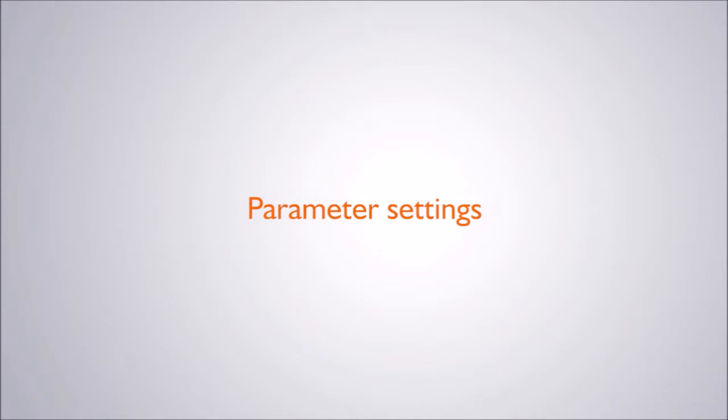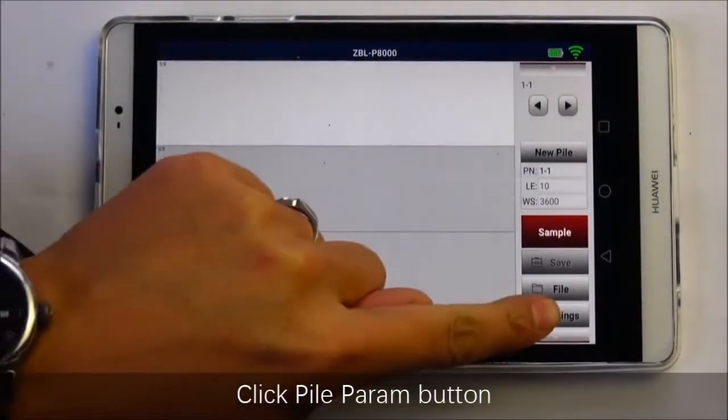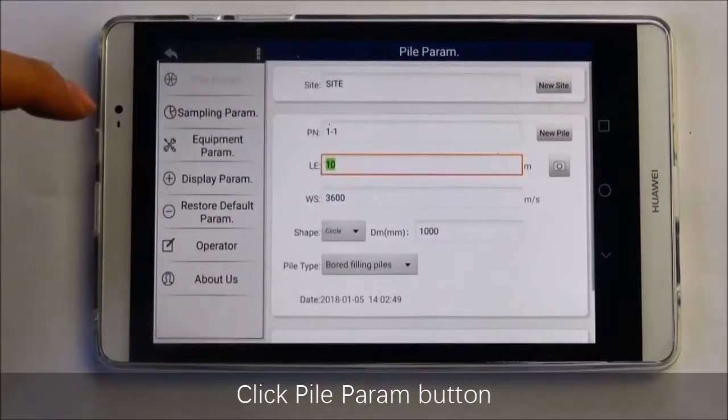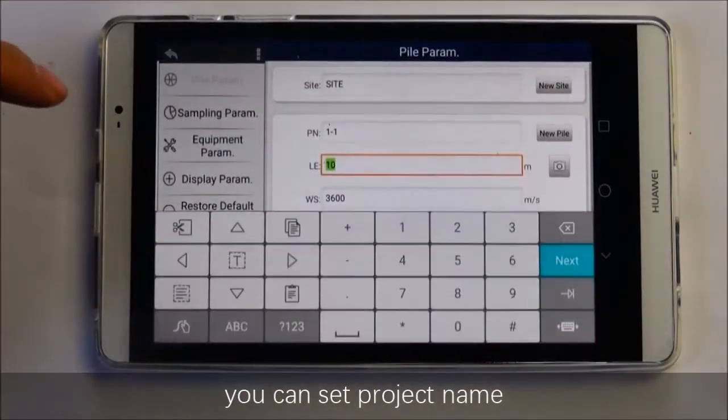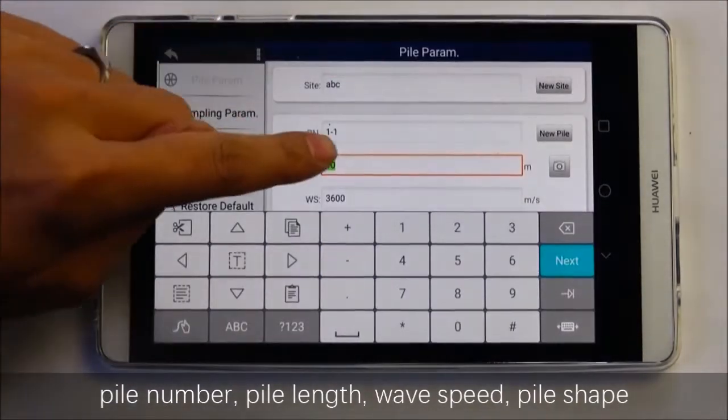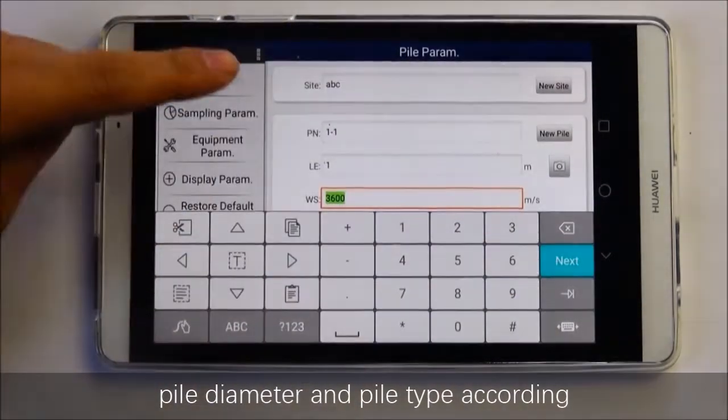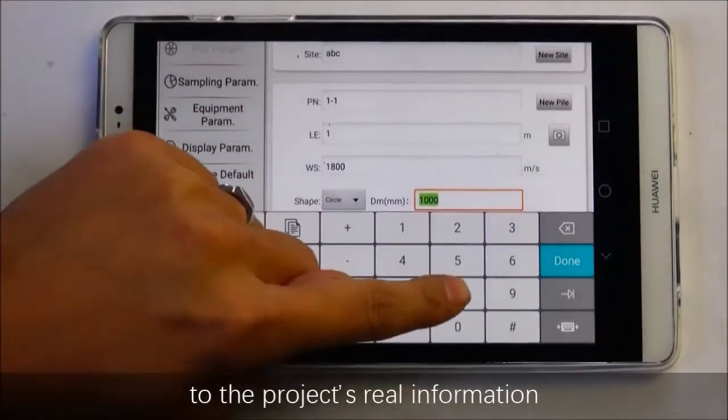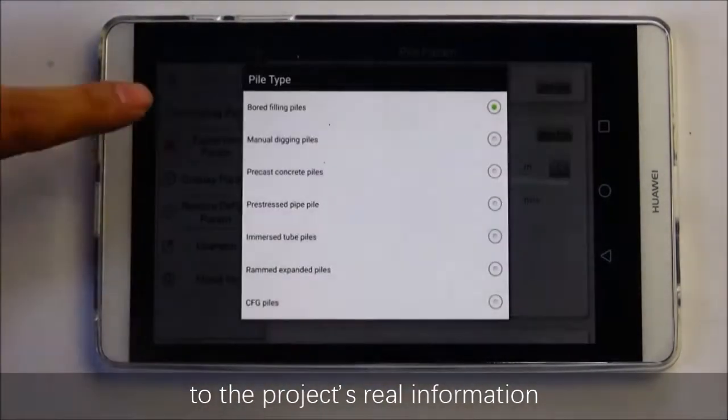Parameter settings: Click the pile parameter button. You can set project name, pile number, pile length, wave speed, pile shape, pile diameter, and pile type according to the project's real information.